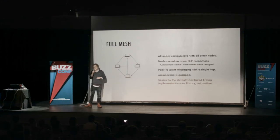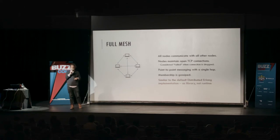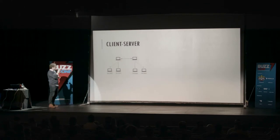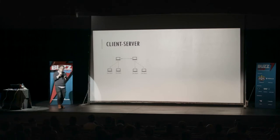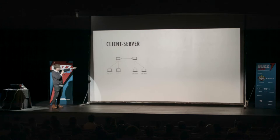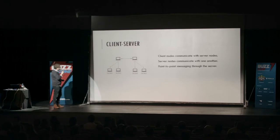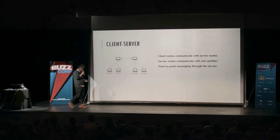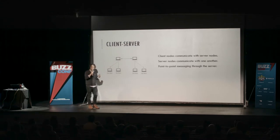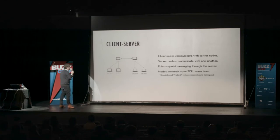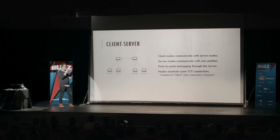The second topology is client-server, specified at runtime — you don't change anything about your application. You take the same application, say you want client-server topology, and nodes organize automatically. Clients talk to servers, servers talk amongst each other. When clients want to send messages, they route through the servers, which serve as a rendezvous. Failure detection same mechanism: open TCP connections; we consider things failed when connections drop.